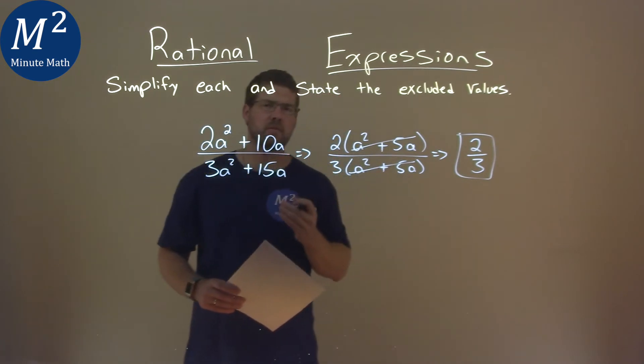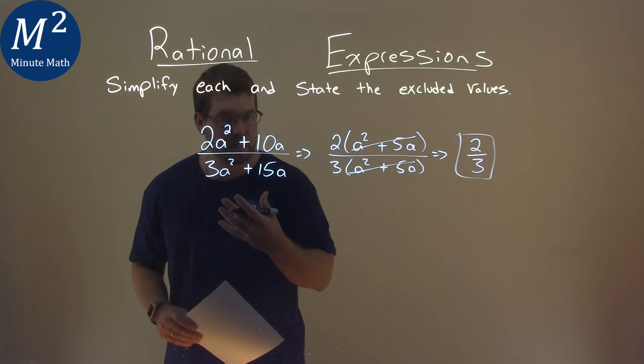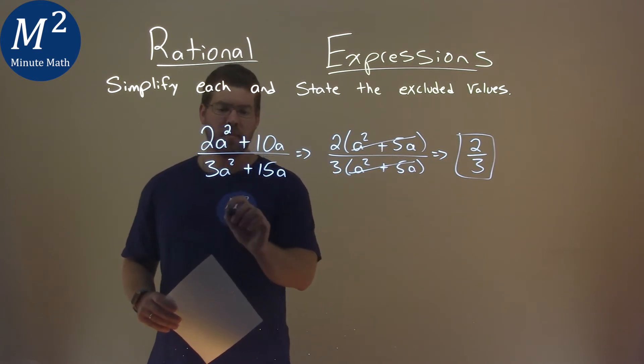But we have to state the excluded value, and to do that, we have to go back to our original expression, and we're looking at the denominator, 3a squared plus 15a.